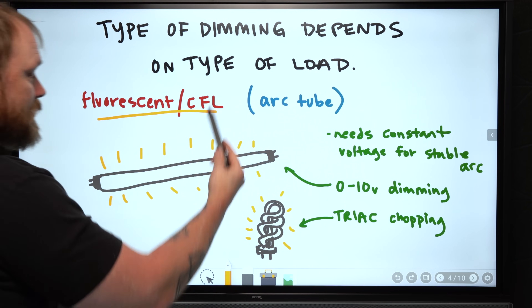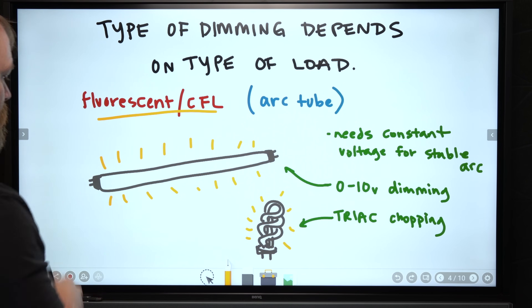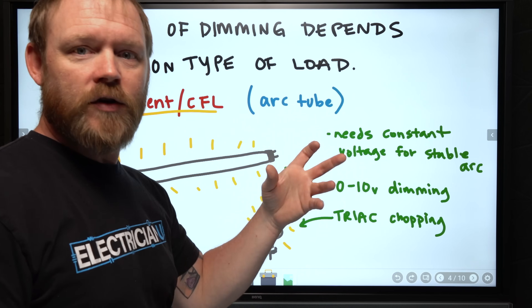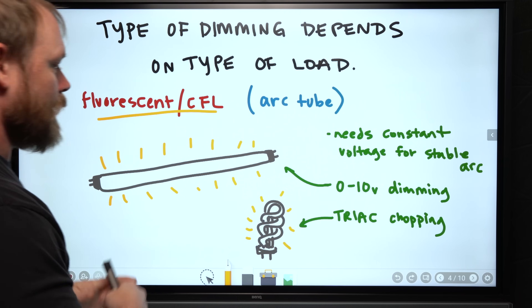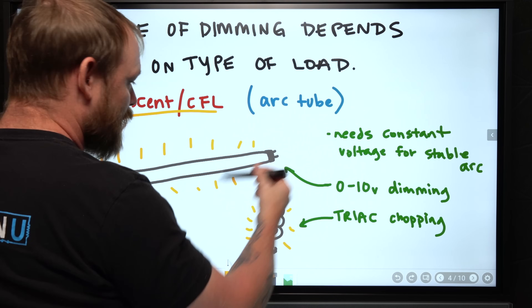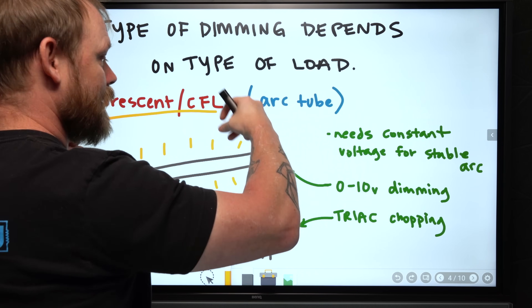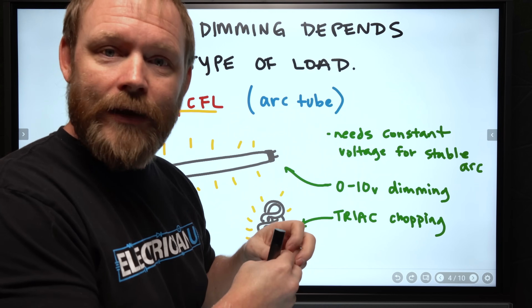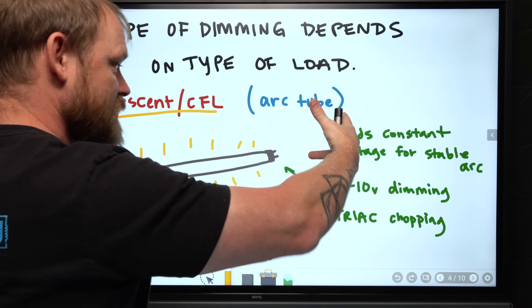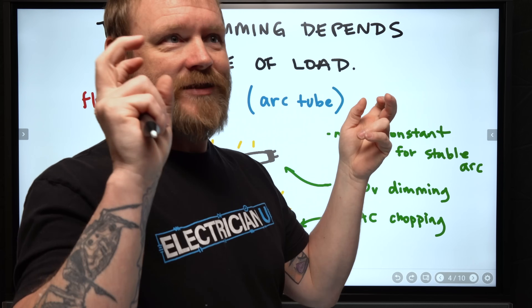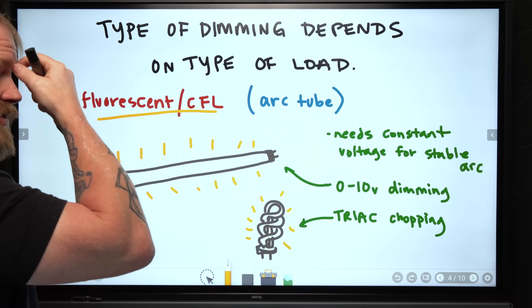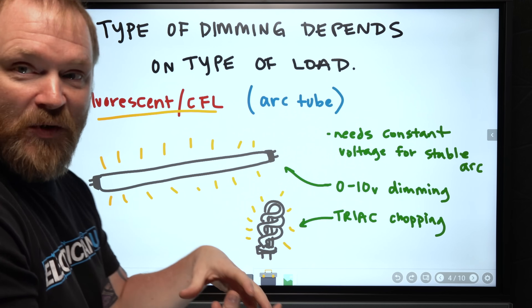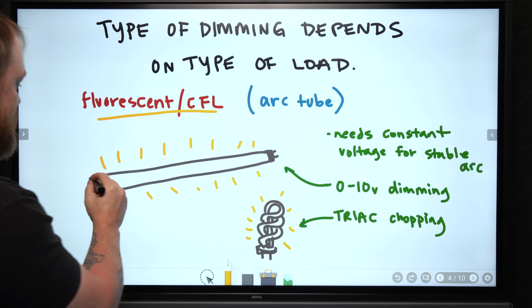Moving to fluorescent and CFL: fluorescent is a giant tube that works on the principle of stabilizing current flow through the tube in an arc - you're using a plasma. They coat the inside with phosphor and there's a small amount of mercury inside. When you ignite the arc, it produces phosphorescence - an ultraviolet light that hits the phosphor coating, causing it to phosphoresce and create light. Compact fluorescents do the same thing; it's basically taking that tube and wrapping it into a knot to make it really small.